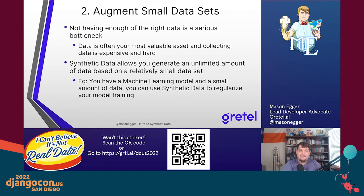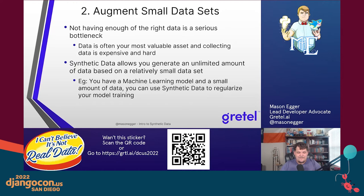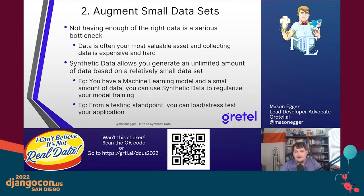If you generate a billion records and send them through and it still doesn't work, now you know the data set may not be representative, or maybe your model math is wrong. Instead of being stuck on data, you can move forward to solving the actual problem — it's like fixing one bug and finding the next one, which means progress. From a testing standpoint, you can also load or stress test your application. You can recreate traffic to your website and replay years of data in just a few days, generating a whole lot of data that looks like real traffic.